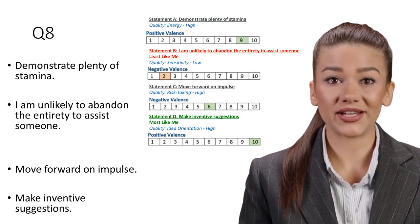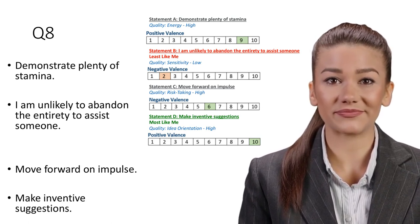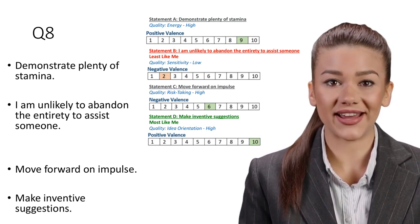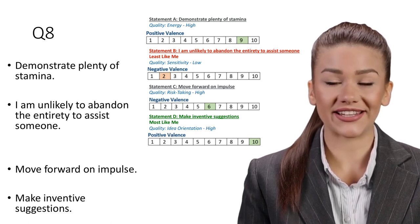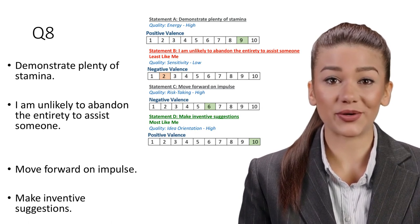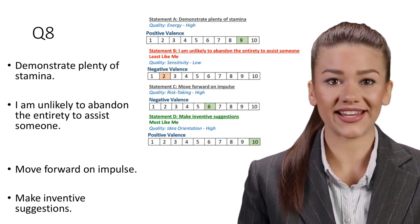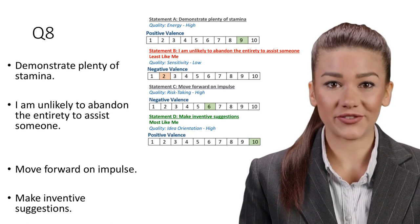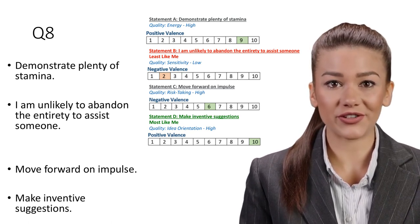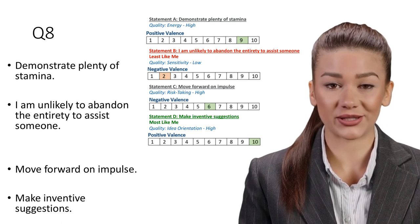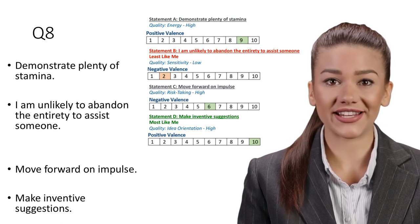Statement C: Move forward on impulse. Quality: Risk-taking, High. Impromptu actions in business may be one of the most important work skills for candidates to present. For example, unrehearsed speaking in business settings can be among the most critical and influential verbal communication you will ever undertake. In balance, however, risk assessment should occur in advance to ensure critical thinking equalizes any impulsiveness.